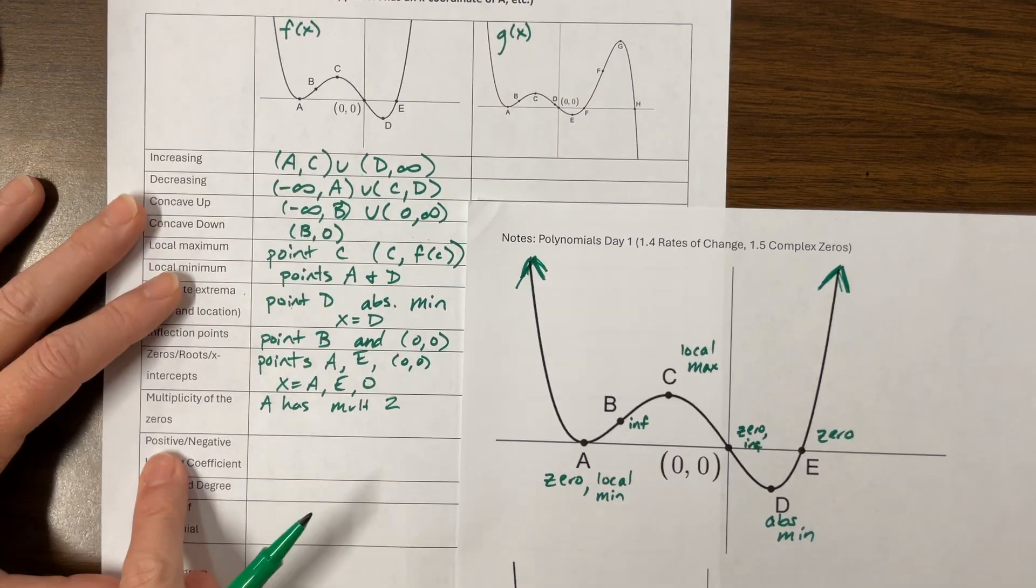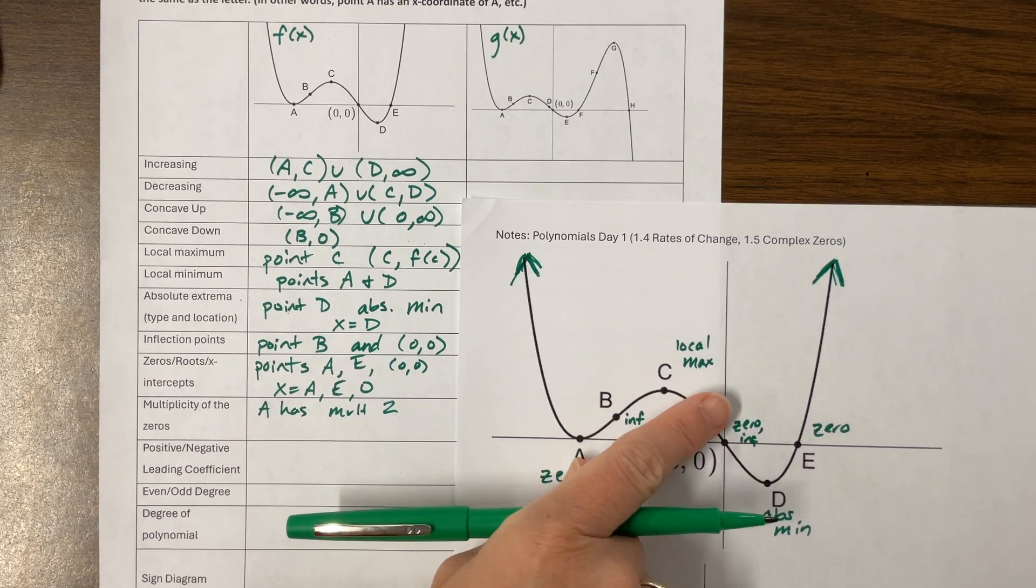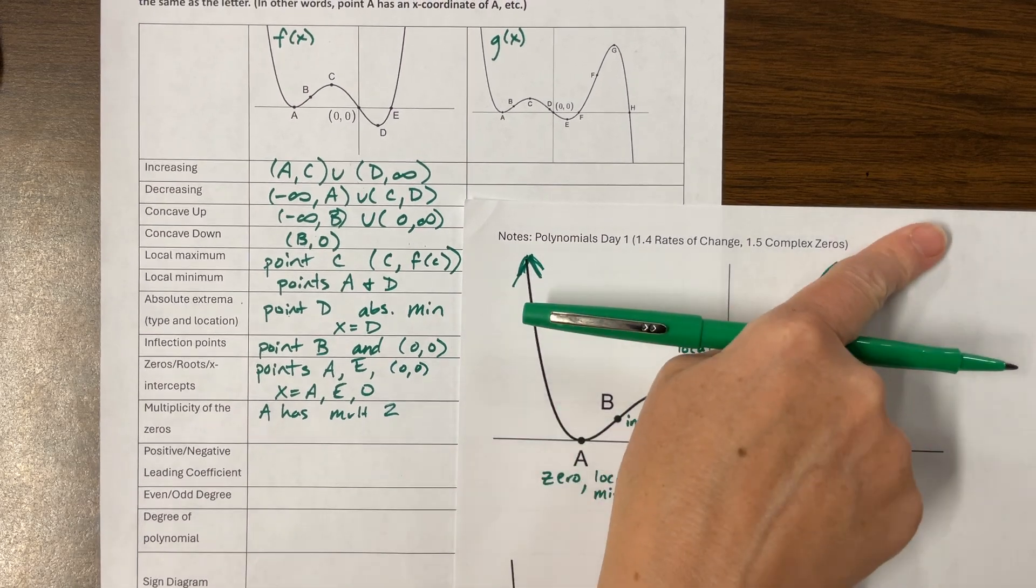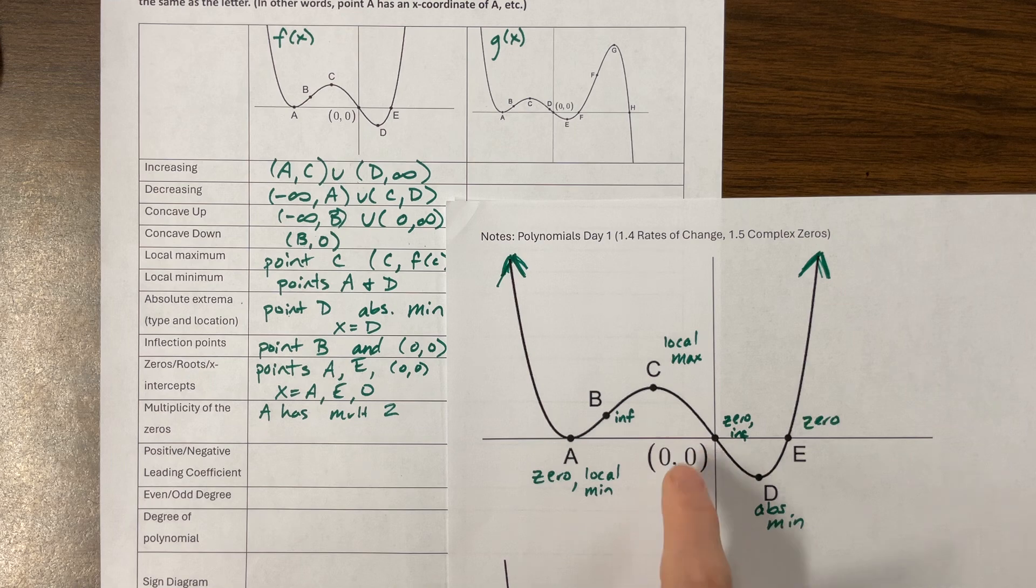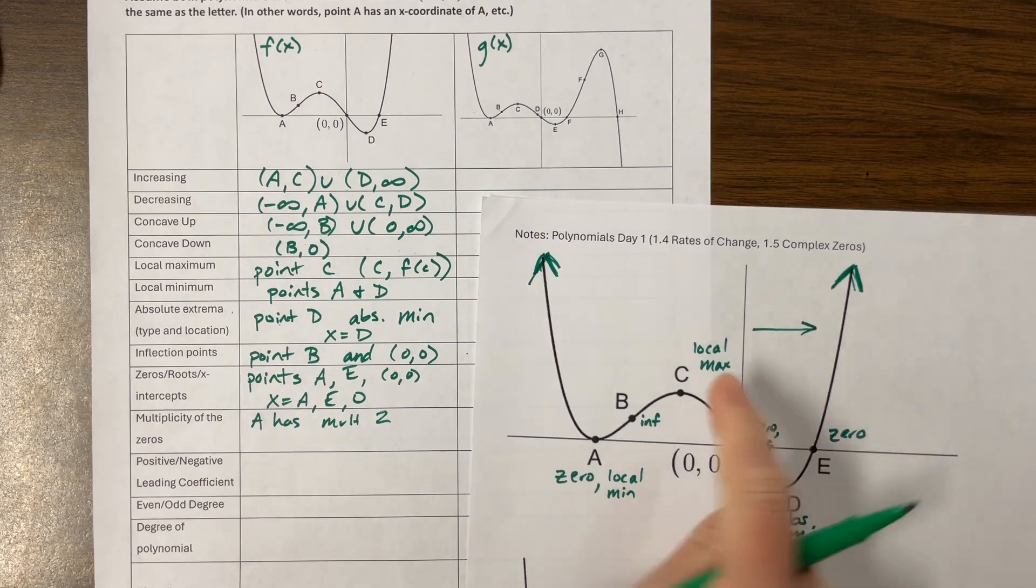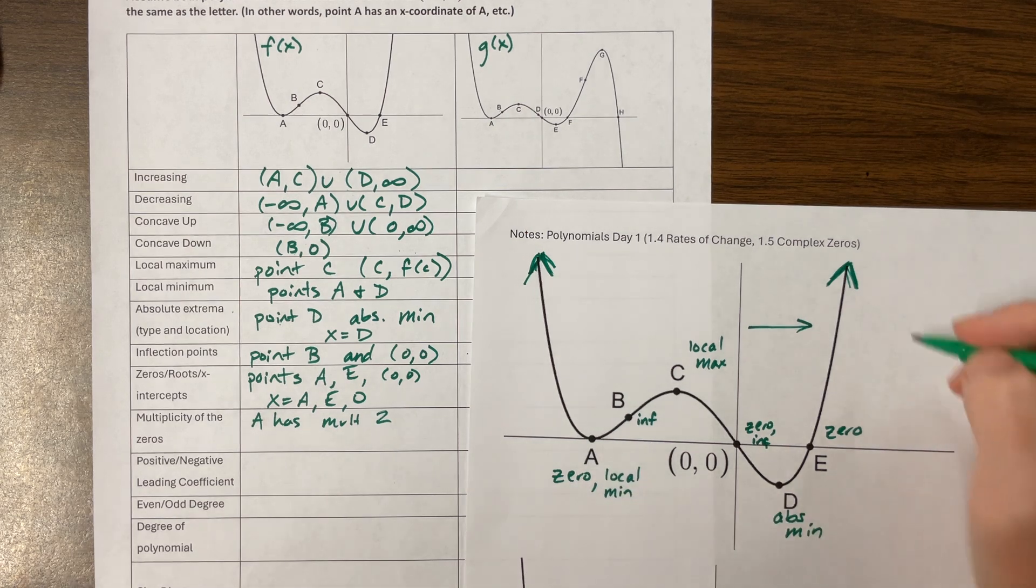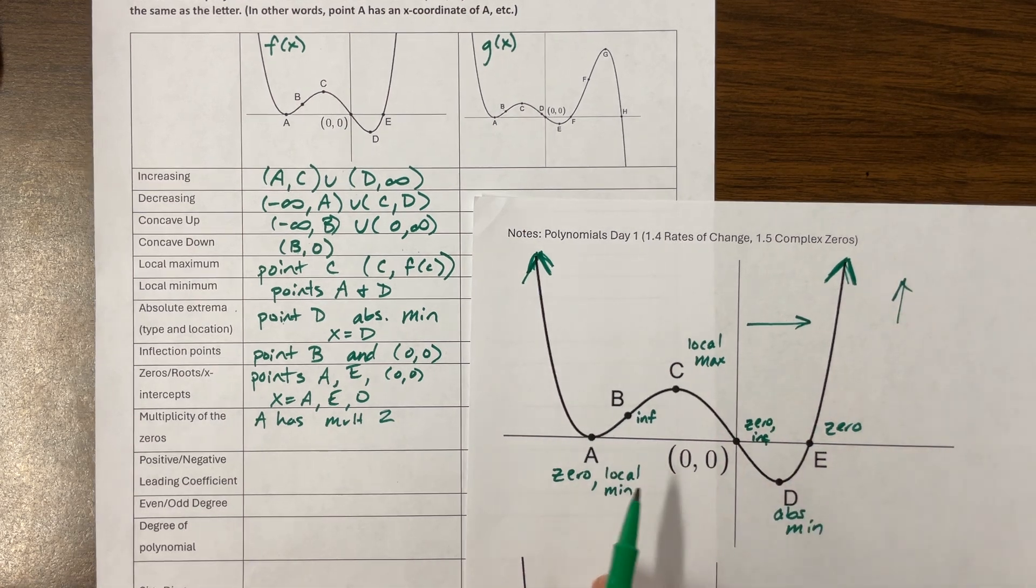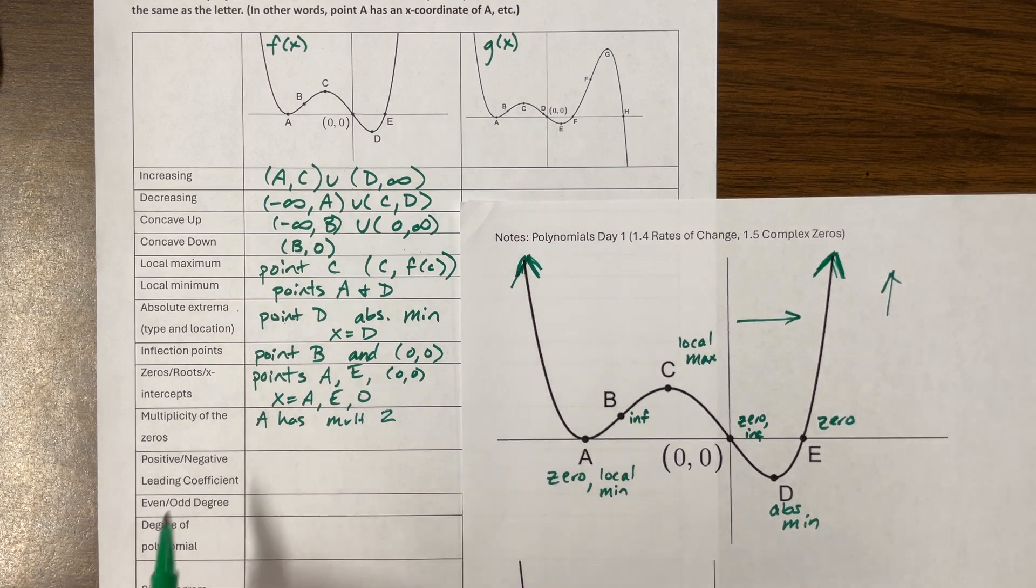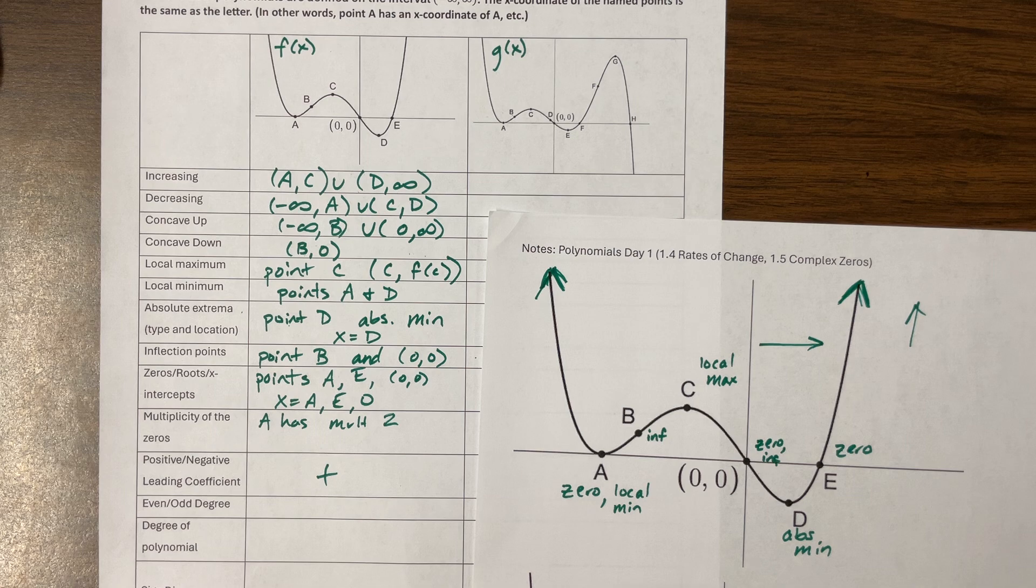So the next thing, does it have a positive or negative leading coefficient? Well, notice we see what its end behavior is doing as it goes off to positive. So let me say that again. As x goes to positive infinity, as my graph, as my x values are increasing and increasing, what are my y values doing? Well, they're going up. And so that tells me that my, excuse me, that tells me my leading coefficient is positive.